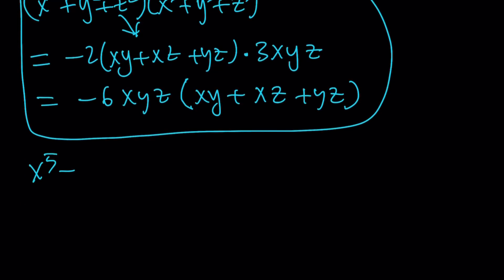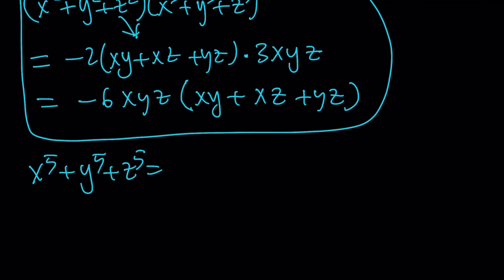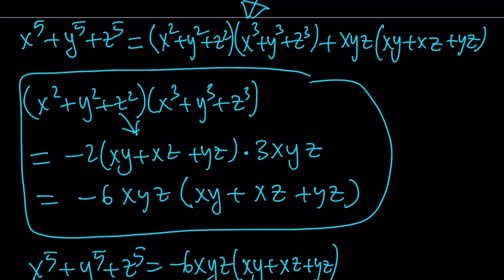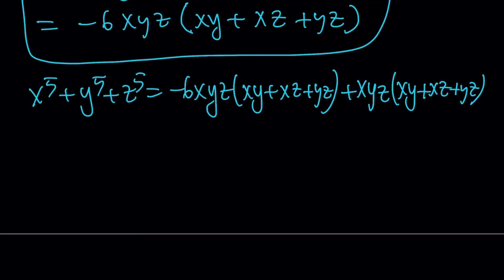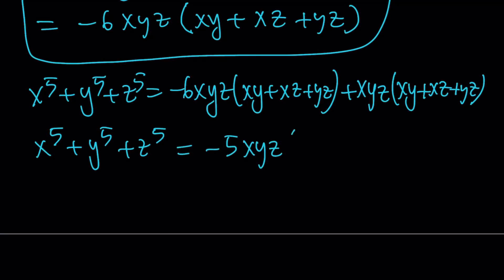Substituting, x to the fifth plus y to the fifth plus z to the fifth equals negative 6xyz times (xy plus xz plus yz), plus xyz times (xy plus xz plus yz). These are like terms — negative six plus one gives us negative five. So x to the fifth plus y to the fifth plus z to the fifth equals negative 5xyz times (xy plus xz plus yz).